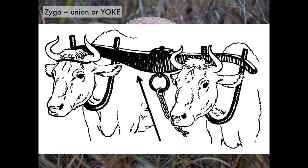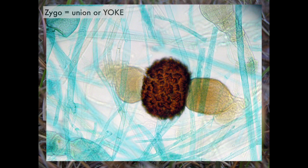The zygomycetes get their name — you will often read that it is because they are the 'zygote fungi,' they produce a zygote. But what I learned from a mycologist is that 'zygo' refers to the Greek word meaning yoke, like yoking two oxen together, which is where we get the word zygote from anyway, referring to a union. The sexual spores of the Zygomycota kind of resemble a yoke. Here's an example of a zygosporangium between two suspensor cells among a bunch of hyphae — that is where the zygomycetes get their name.